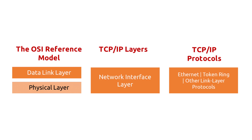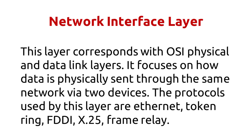Network Interface Layer: this layer corresponds with the OSI physical and data link layers. It focuses on how data is physically sent through the same network via two devices. The protocols used by this layer are Ethernet, Token Ring, FDDI, X.25, and Frame Relay.